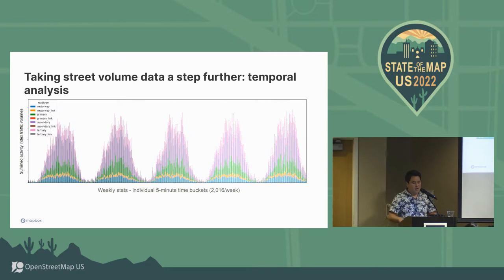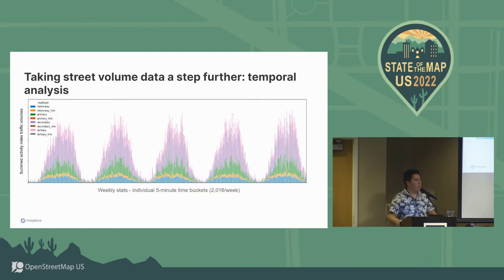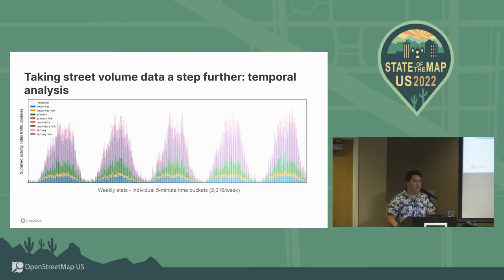One advantage of bringing this data down to the segment level and looking at it temporally is just the amount of drill-down you can achieve beyond what MDOT enables. At Mapbox we profile every road segment at five-minute intervals by day of week — a total of 2,016 five-minute buckets per day of week. Each bucket has a histogram of the typical distribution of volume. You can sum up the five-minute intervals and see the undulation of traffic across an area for a typical week, then segment that thanks to OSM tagging to see the sub-distribution between different roadway classifications.